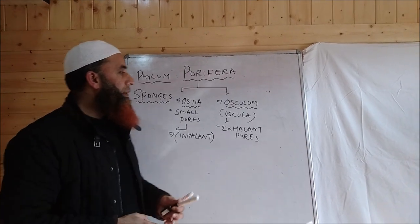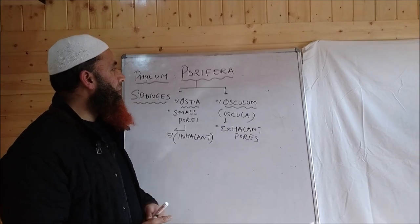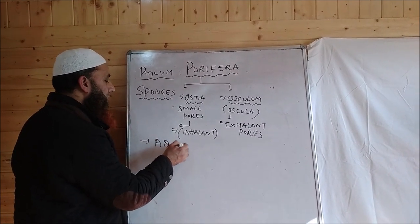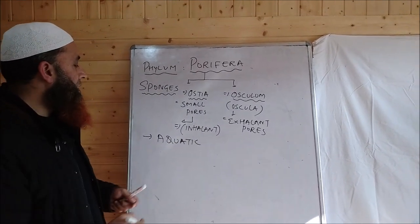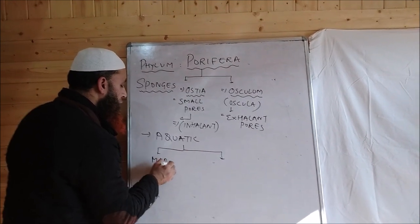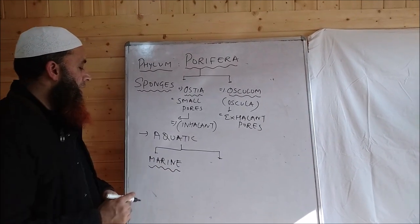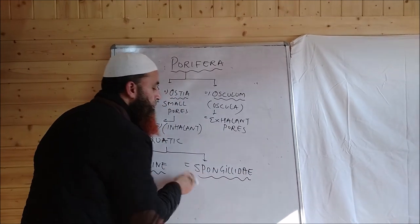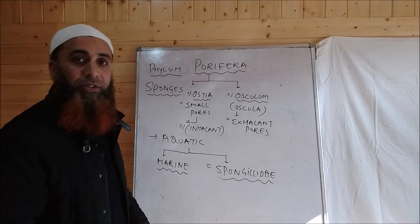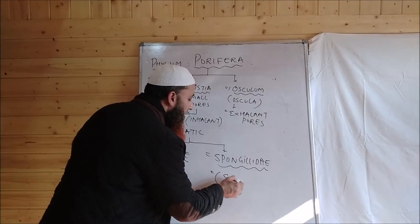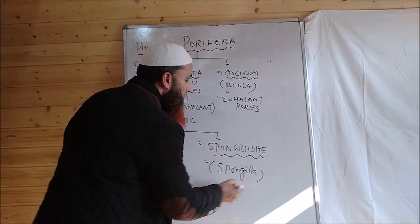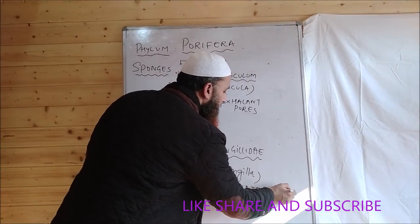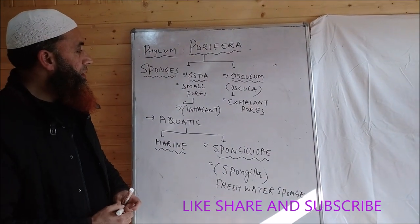Porifera are aquatic animals and most of them are marine. However, there is one family known as Spongilla which is found in fresh waters. For example, Spongilla is commonly known as the freshwater sponge. This is their habitat.